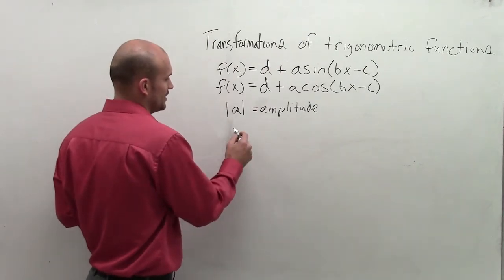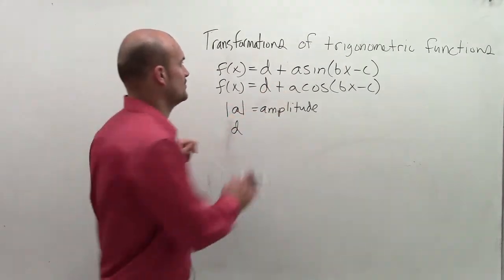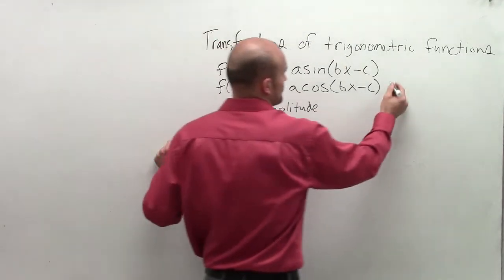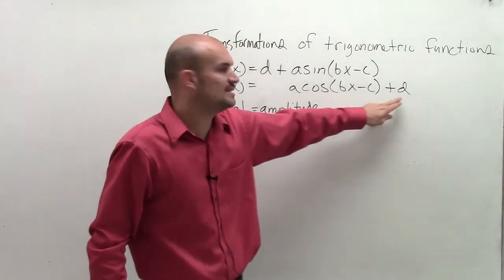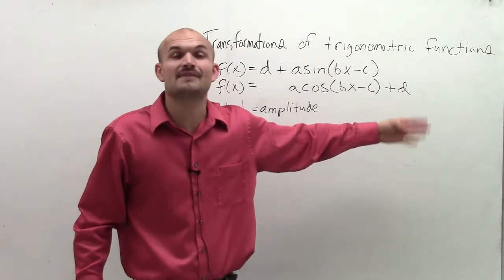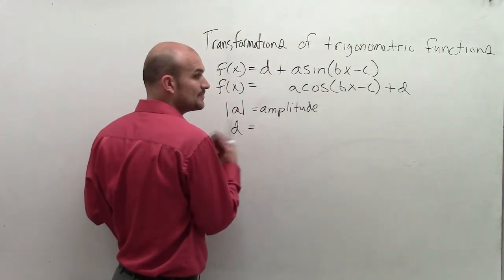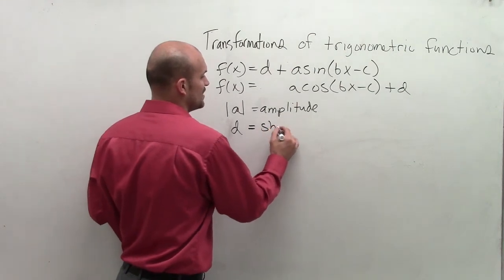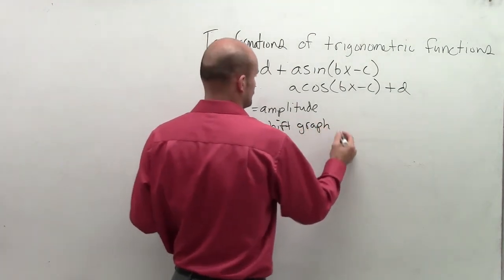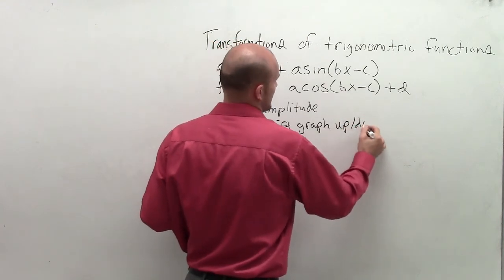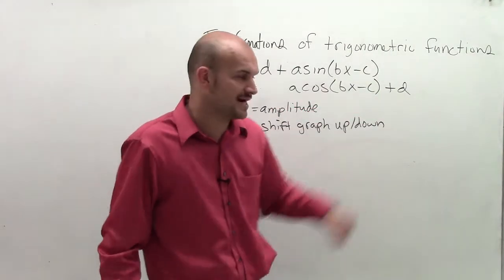Then let's take a look at d. Well, d is being added outside your function. Sometimes we write it before the function, or let's say I wrote it after the function - you can see this very much resembles the k from a quadratic. So d is actually going to do the similar effect. d is going to shift your graph up or down, and the number of units you're going to shift the graph up or down is going to be dependent on d.